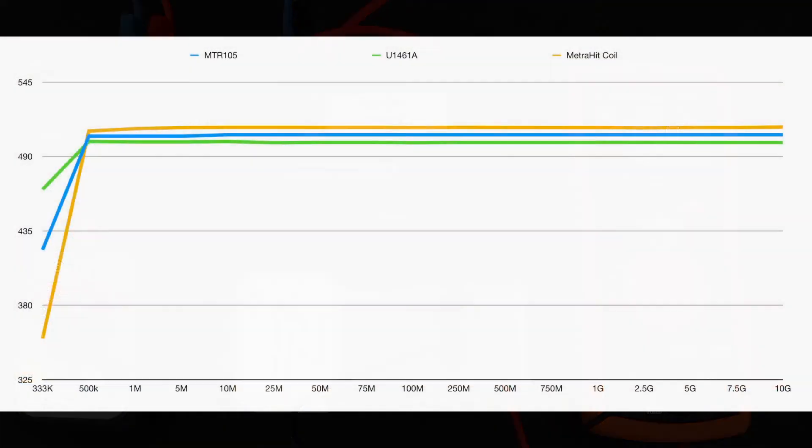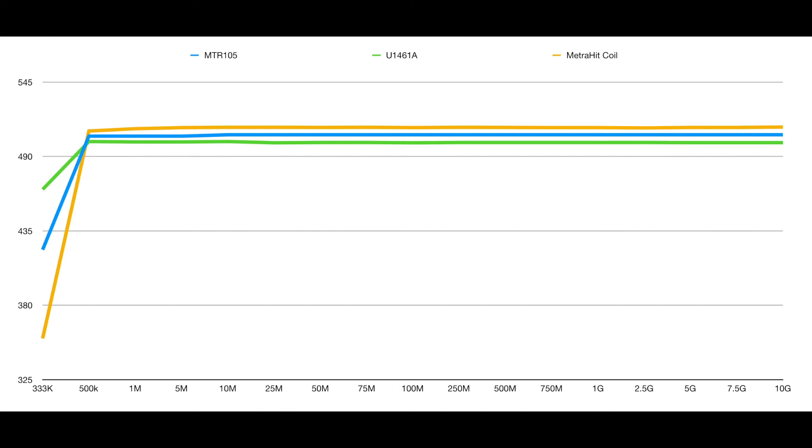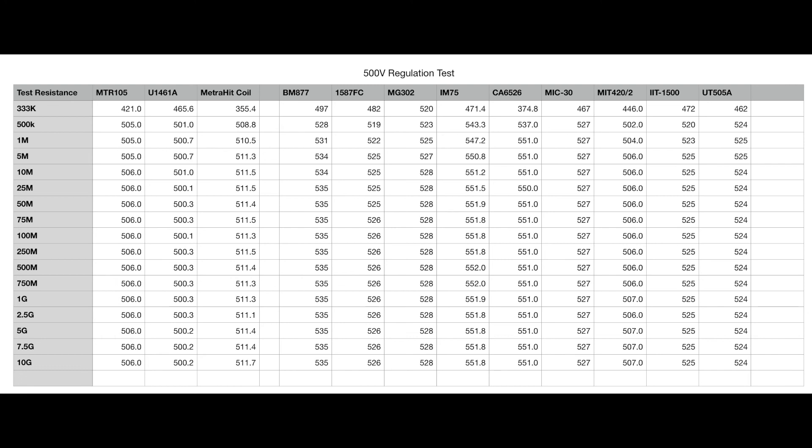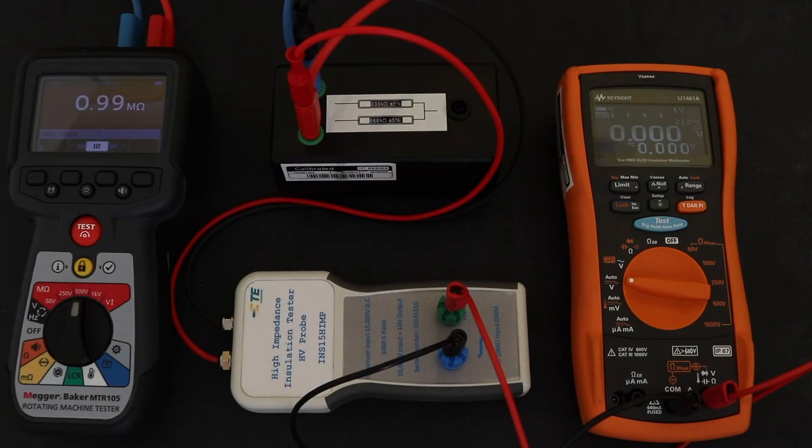So I put the plot up and the data table of the actual voltage regulation and you can see the MTR105 starts off down at 421 volts. As soon as you've gone above your 500k you're up to 505 volts and it pretty much stays there, 506 as a maximum that gets out to across the resistance ranges. You see a very similar response from the Keysight unit, actually quite a bit better. You can see from the Metrahit coil it starts off with a much lower voltage and a much wider span, actually goes up to 511 volts when you're up to the 10 gig ohms. But you can see a comparison to a few of the other instruments. Now the worst I get is actually up to 550 volts for the FLIR unit and the Chauvin Arnoux unit as well gets up to 551 volts. So you can see the voltage regulation is actually quite good on both the MTR105 and the U1461A.